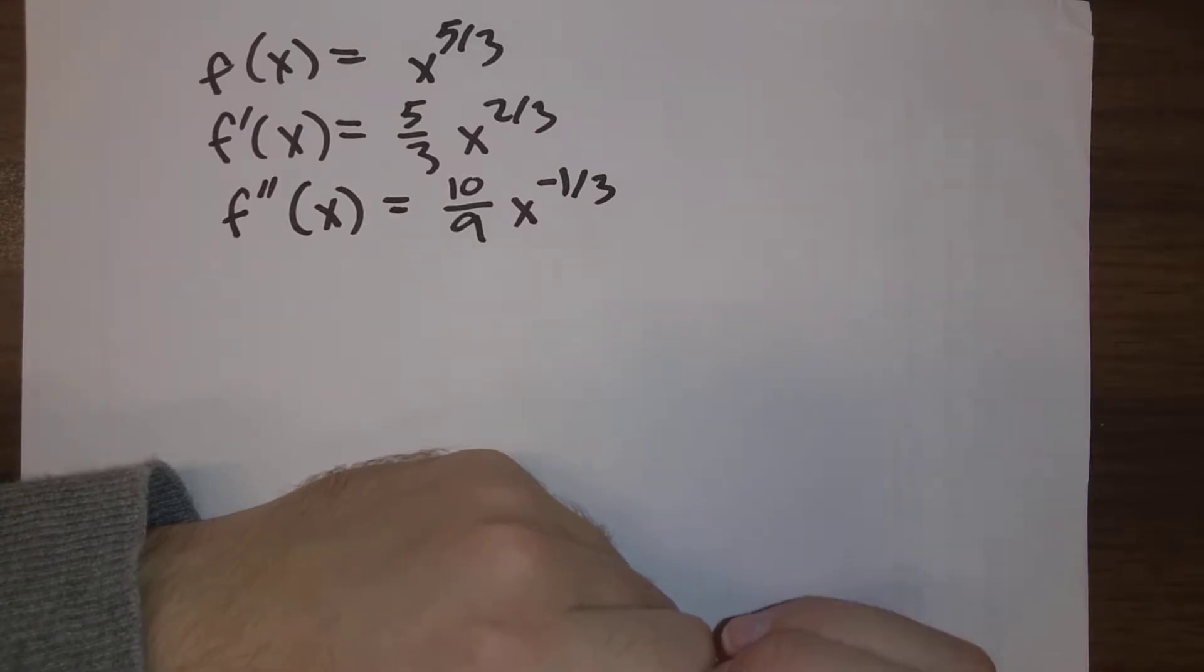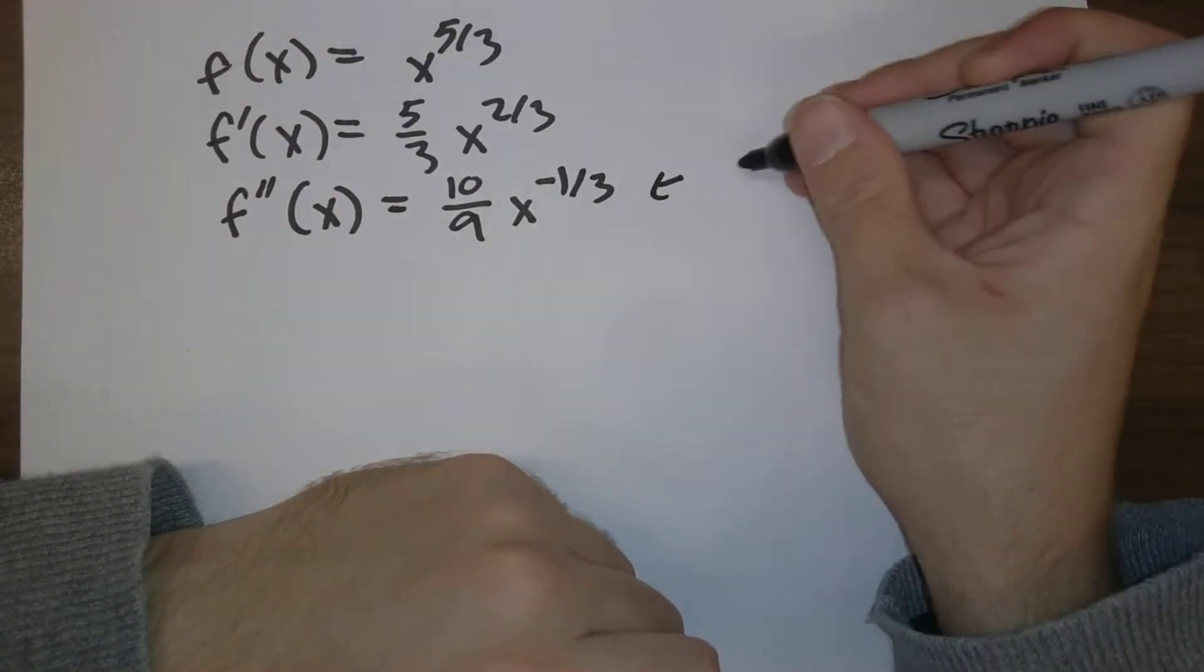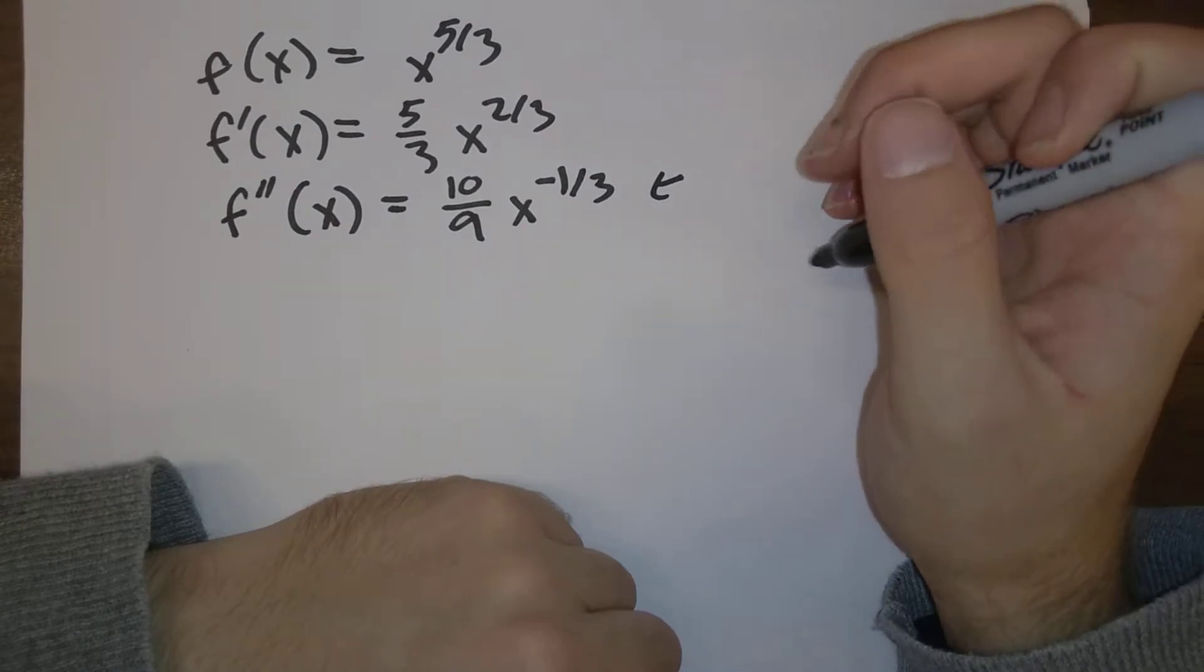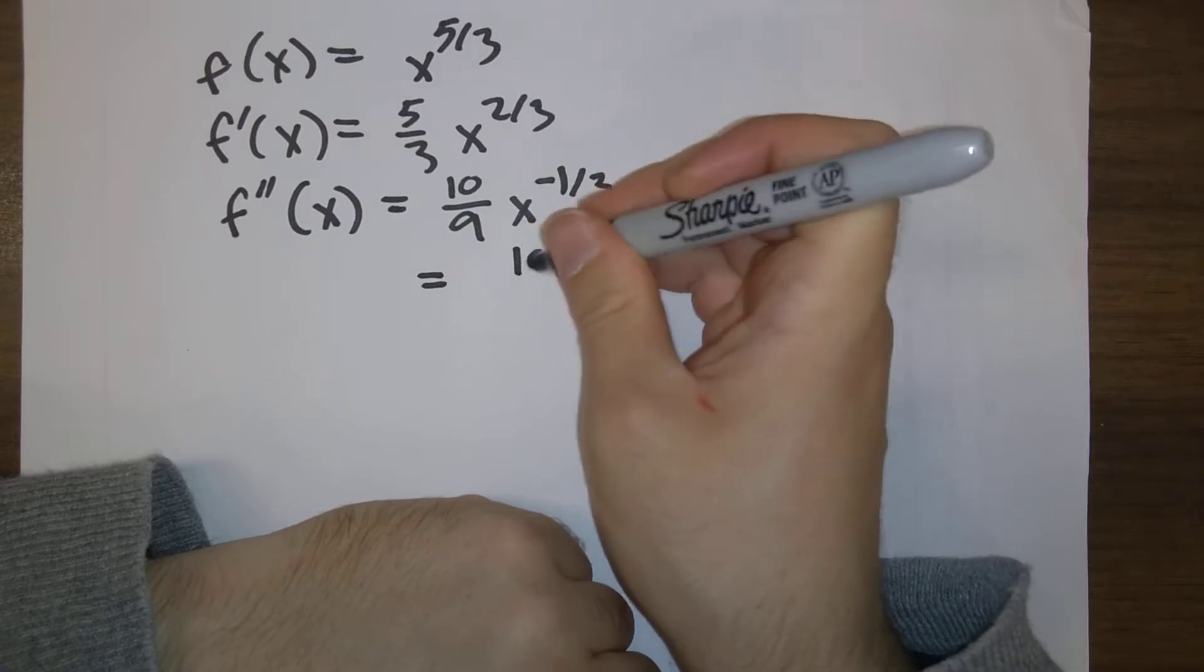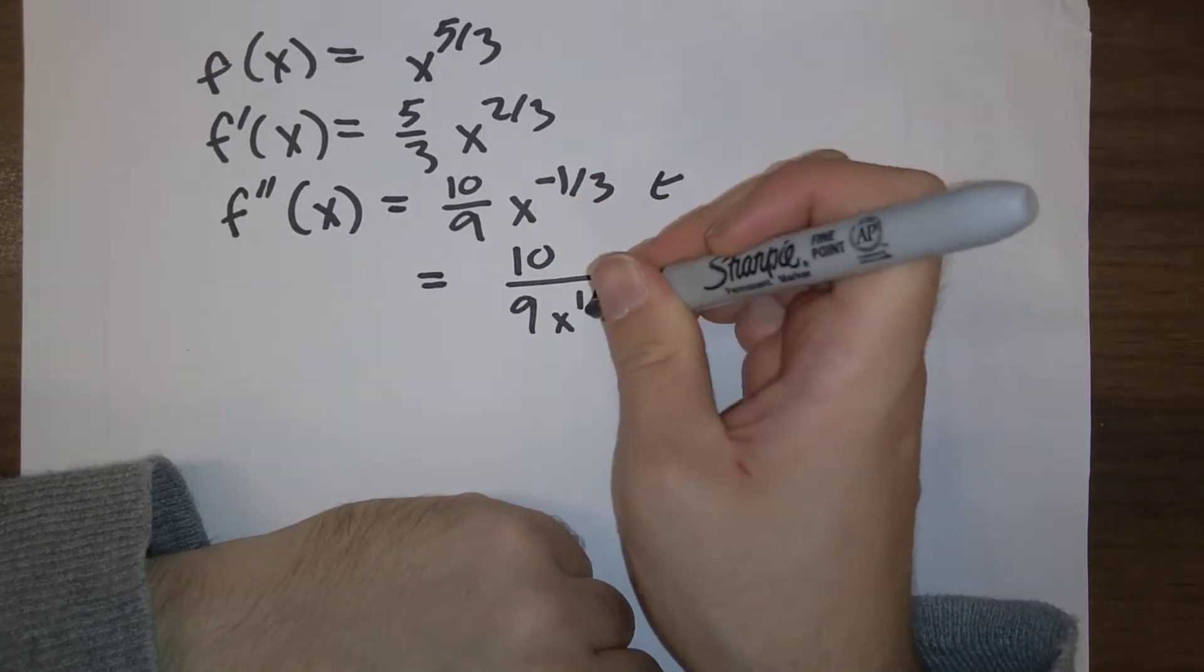So what do we notice here? There's no values for which this is equal to zero. This is, of course, ten over nine x to the one-third power. This is never equal to zero,